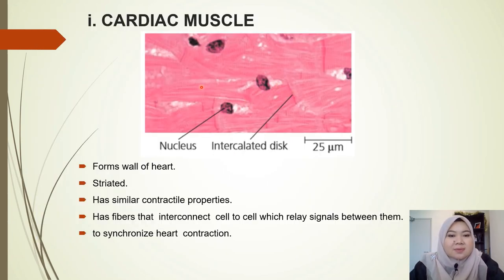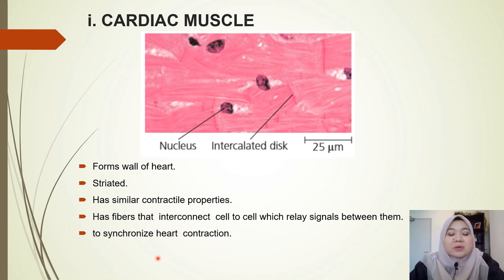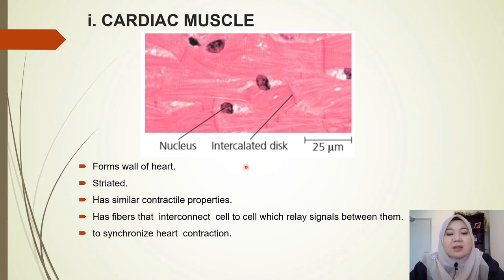The first muscle type is cardiac muscle, which forms the wall of the heart. Cardiac muscle is striated, meaning it has the appearance of repeating bands of actin and myosin. It has similar contractile properties — fibers interconnect cell to cell and relay signals between them to synchronize heart contraction. Cardiac muscle has a specialized junction called the intercalated disc, where the fibers are joined together.